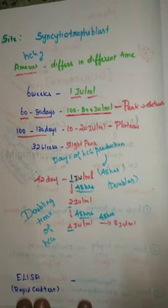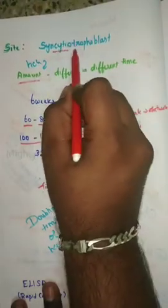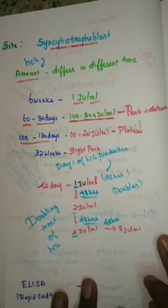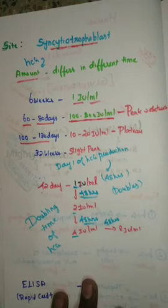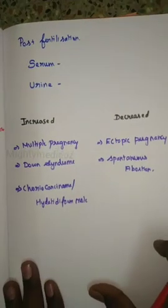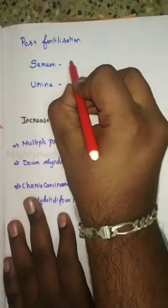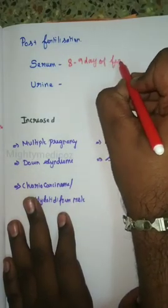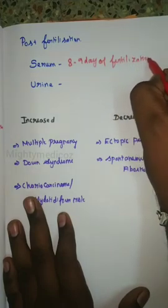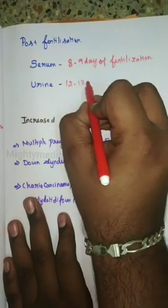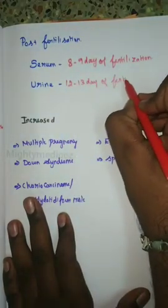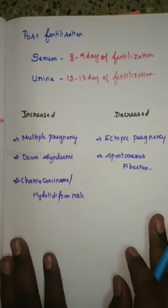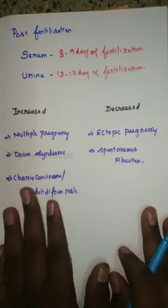HCG is produced by the syncytiotrophoblast. A fertilized ovum need not be implanted for HCG production — if syncytiotrophoblast is present, it can produce HCG. Beta HCG can be detected in serum on the 8th to 9th day post-fertilization, and in urine on the 12th to 13th day post-fertilization. We detect beta HCG specifically, not alpha HCG, because the alpha subunit is not unique to HCG.